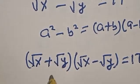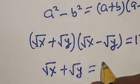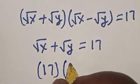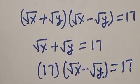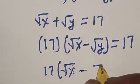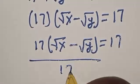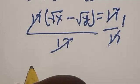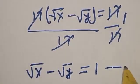From equation 1, square root of x plus square root of y is equal to 17. Now let's substitute: we have 17 multiplied by square root of x minus square root of y is equal to 17. Dividing both sides by 17, this cancels, giving us square root of x minus square root of y is equal to 1. Let's call this equation 3.